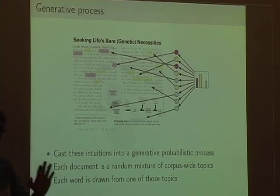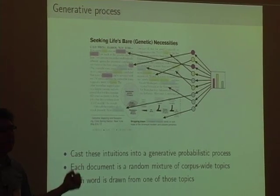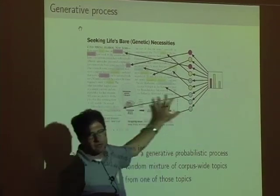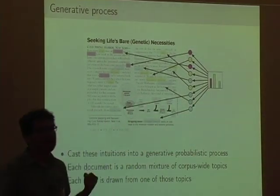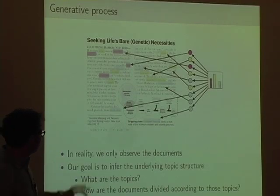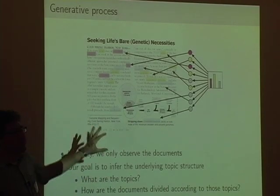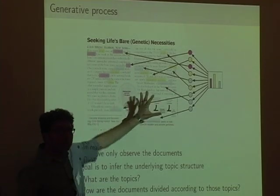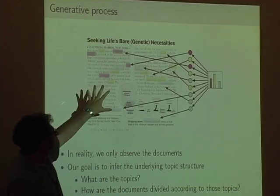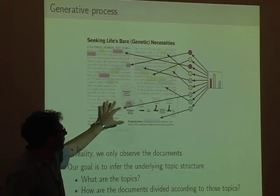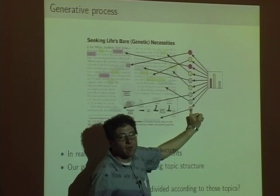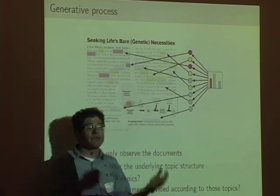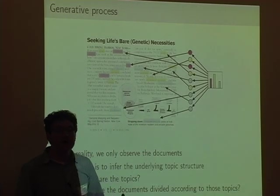We repeat this process for every document. Another document that's not about this stuff first chooses a different distribution over the topics, then draws its words from those topics. In reality, we only observe the documents — we don't get to see all this hidden structure. The goal is to infer the underlying topic structure: figure out what topics each word came from, what distribution over topics each article came from, and what are the distributions over words that those topics correspond to, automatically.